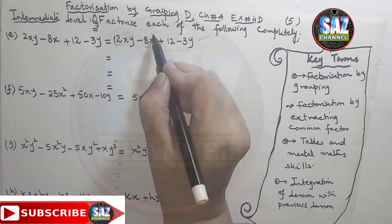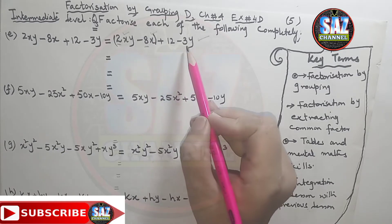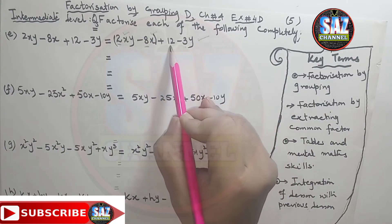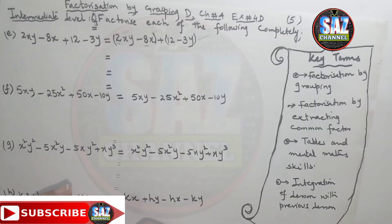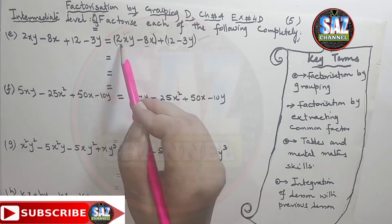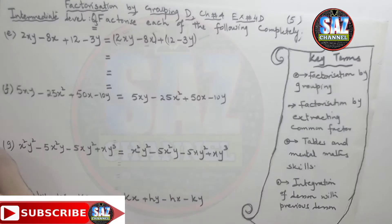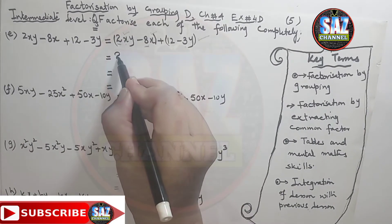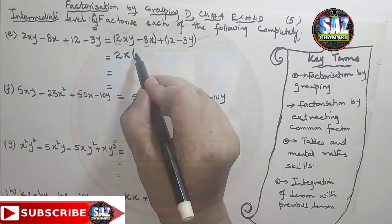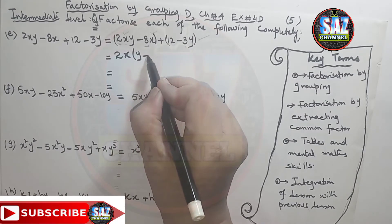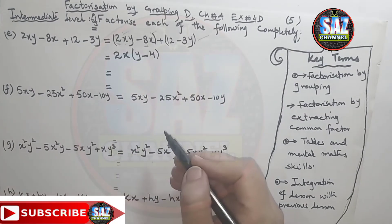I will be putting 2xy and minus 8x in one group. Then, from 12 and 3y, 3 goes into 12 four times, so we can make another group from these two terms. After making the groups, you have to see what number or letter is common in each group. From 2xy minus 8x, 2 is the common factor from the numbers, and x from the letters. After pulling out 2x, from the first term I will be left with y. Then I copy the sign, and 8 divided by 2 is 4, giving y minus 4.